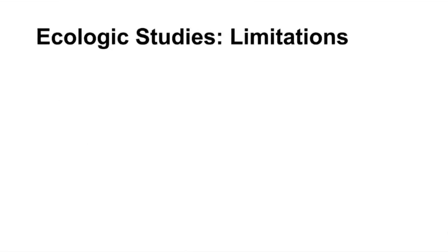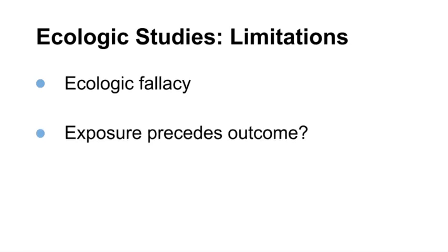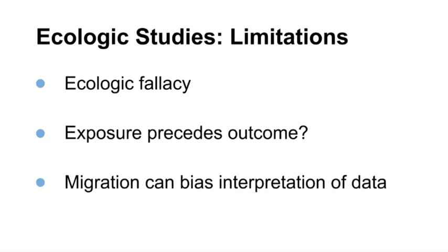Now we will discuss limitations of the ecologic study design. The ecologic fallacy — concluding that associations at a group or aggregate level are true at the individual level when they may not be — is the major limitation. Another limitation is that we cannot be confident that exposure preceded the outcome. Lastly, we do not know what happens to individual people; thus, migration into and out of communities can bias the interpretation of ecologic studies.